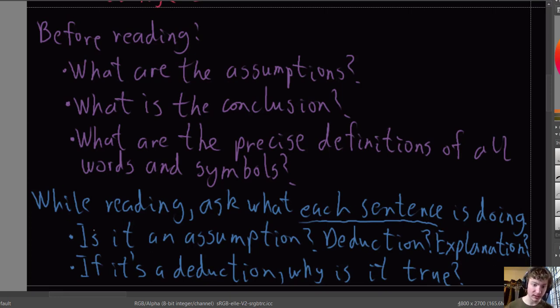So as you read each sentence, you have to ask, what is this sentence doing? Is this stating an assumption, or is this a logical deduction, which must be true because of all of the things we've assumed before? If it is a deduction, do you understand why it's true?